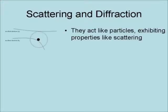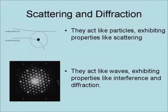Scattering and diffraction are two ways that subatomic particles exhibit this dual nature. They sometimes act like particles, exhibiting properties like scattering, while at other times they act like waves, exhibiting properties like interference and diffraction, such as the electron diffraction pattern shown here.